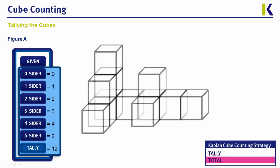So our tally for this figure will be: zero zero-siders, one one-sider, two two-siders, three three-siders, four four-siders, and two five-siders. This isn't necessarily the order you'd want to count in — instead you'd want to be methodical, start in one position, and move very systematically out from there.